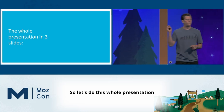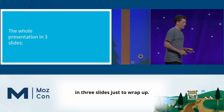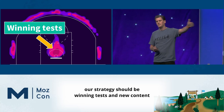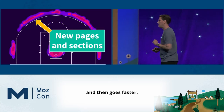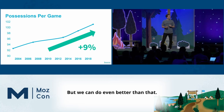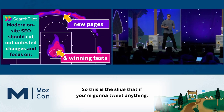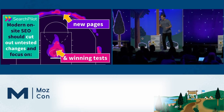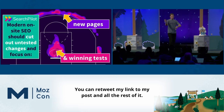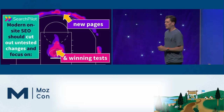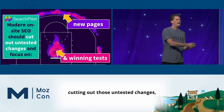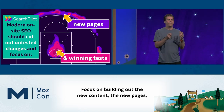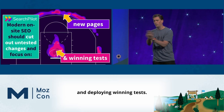Let's do this whole presentation in three slides to wrap up. Our strategy should be winning tests and new content — and then go faster. In one slide: modern on-site SEO means cutting out those untested changes, the deceptively attractive mid-range. Focus on building out the new content, new pages, new site sections, and deploying winning tests.